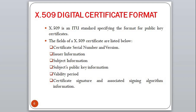Next is subject's public key information, which includes the public key, the public key algorithm used, and the public key parameters. For example, if the public key algorithm is RSA, they need to mention the key parameters: the modulus n and the exponent e. The next field is validity period — two date fields specify the start date and end date between which the certificate is valid. The last field is the certificate signature and associated signing algorithm information, since the certificate must be signed by the issuer to verify its authenticity.